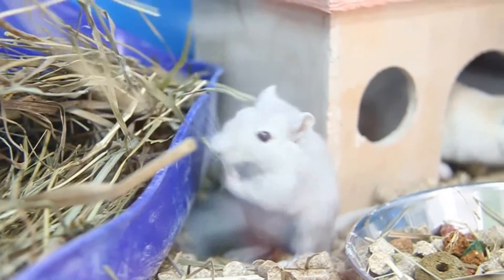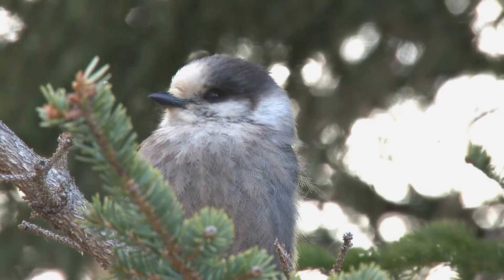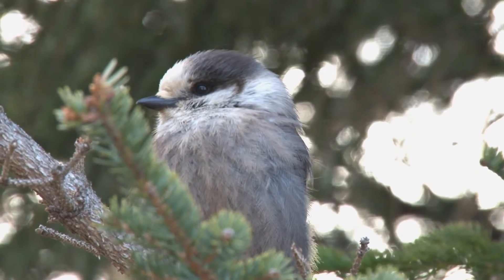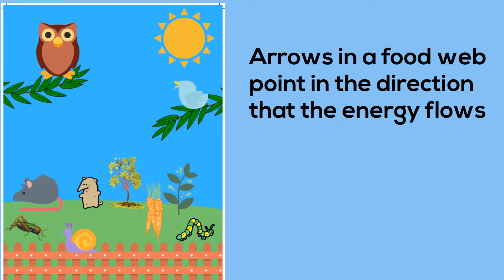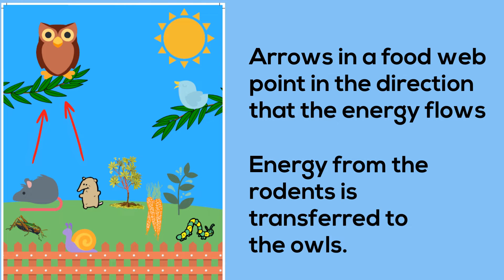and occasionally small birds. The arrows point in the direction of the transfer of energy. The energy of the rodents is transferred to the owl, so the arrows are pointed in that direction. The bird's energy is also transferred to the owl, so the arrows point towards the owl.